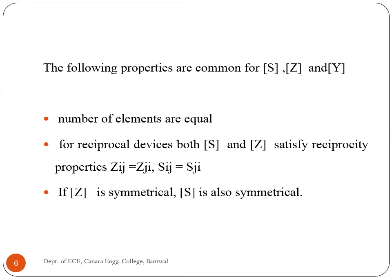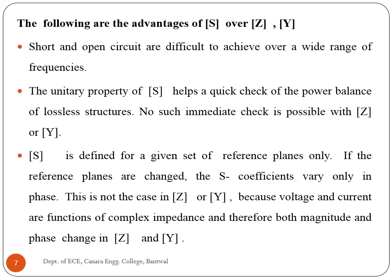The following properties are common for S, Z, and Y matrices: the number of elements is equal for reciprocal devices; both the S matrix and Z matrix satisfy reciprocity properties; if the Z matrix is symmetrical, the S matrix is also symmetrical. The advantages of S matrix over Z and Y matrices include: equipment is not readily available to measure total voltage and total current at the port; short circuit and open circuit are difficult to achieve over a wide range of frequencies; and the presence of active devices such as power transistors and tunnel diodes makes the circuit unusable for short and open circuit conditions.